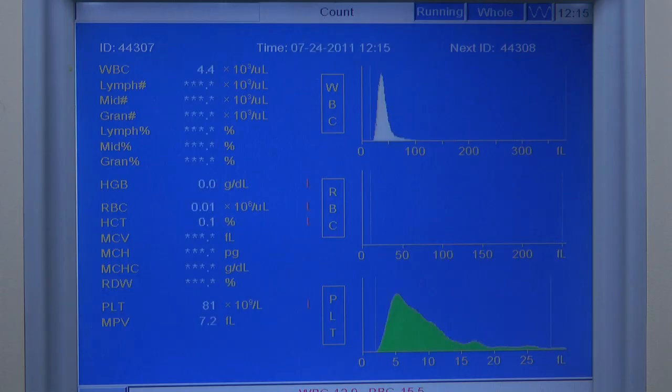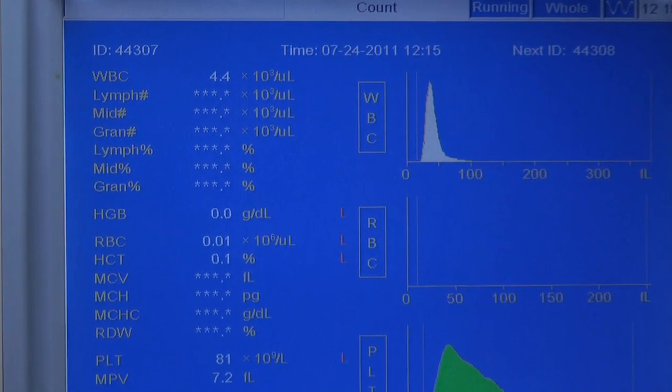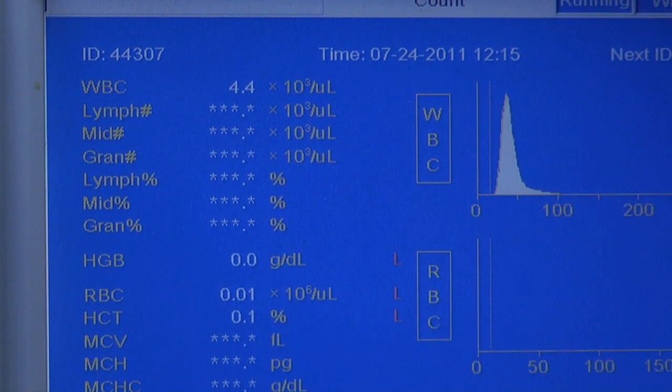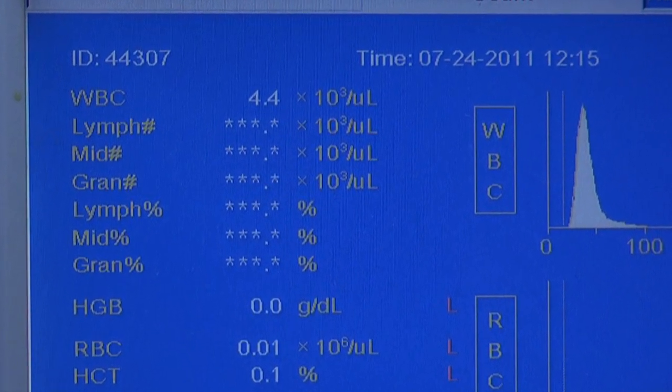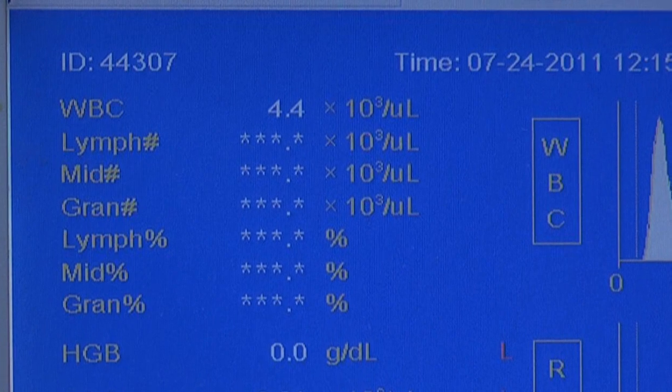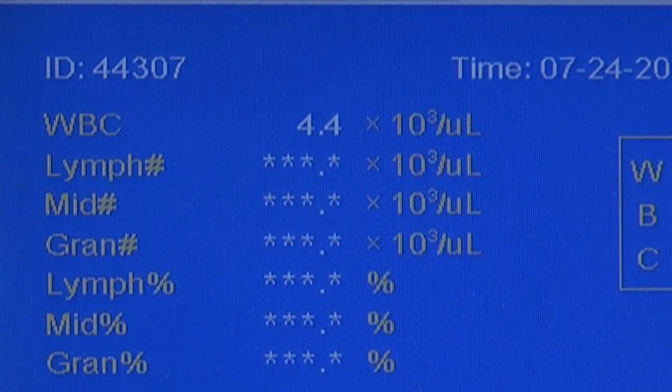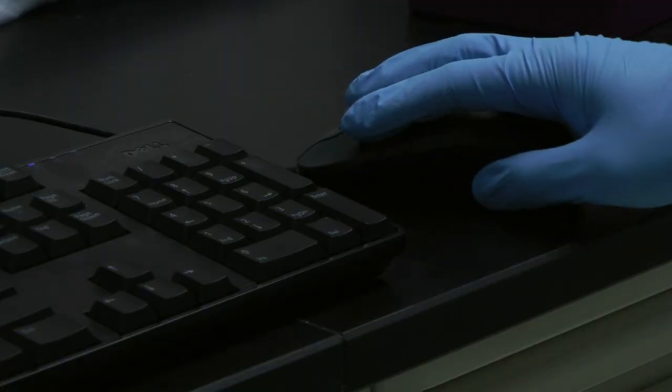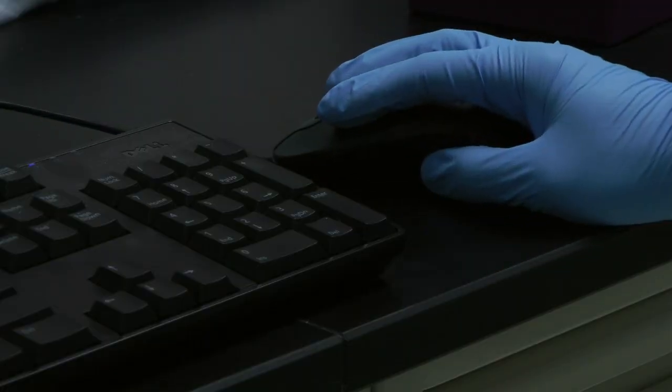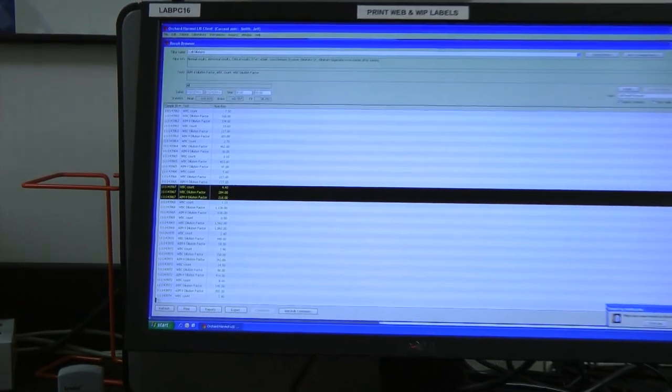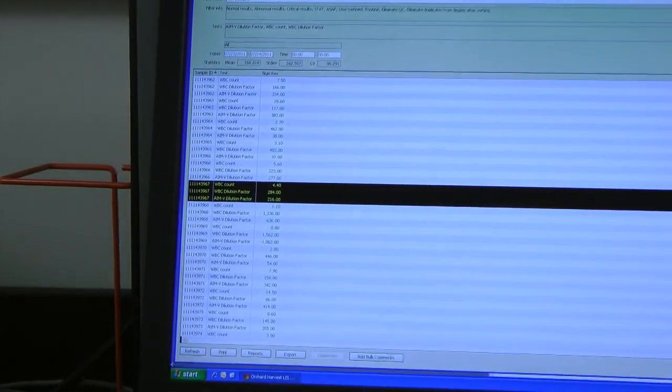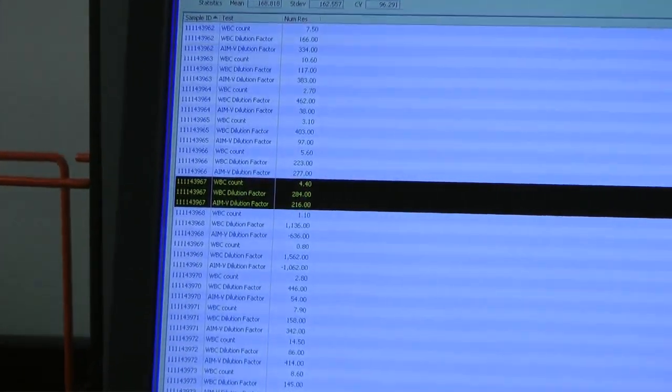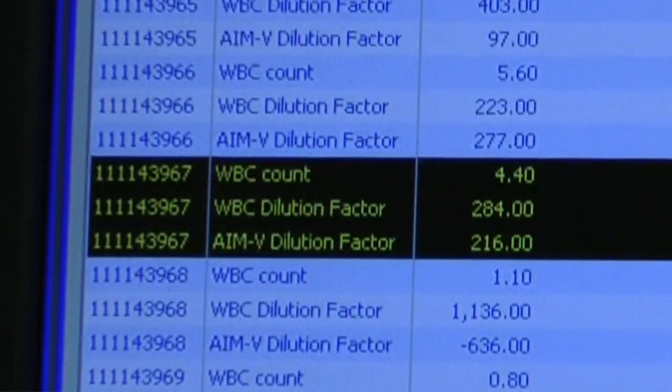Once the PBMC count is available, a 500 microliter final cell suspension must be prepared at a concentration of 2.5 times 10 to the fifth cells per 100 microliters. A formula is built into the laboratory information system such that based on the PBMC count, the laboratory information system calculates the amount of PBMCs and AIM-5 cell culture media necessary to prepare a final cell suspension.